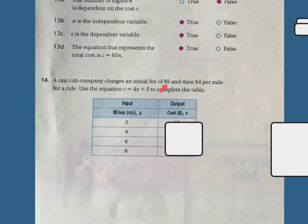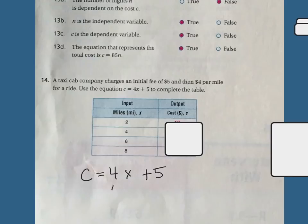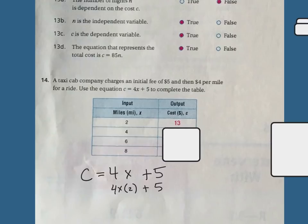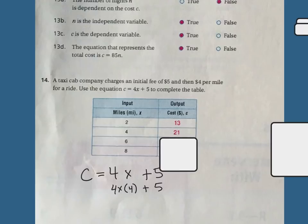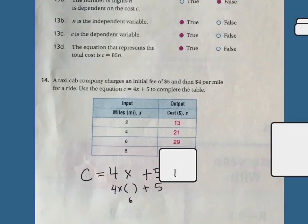Number 14: a taxi cab company charges an initial fee of $5 and then $4 per mile for a ride. Use the equation C equals 4X plus 5 to complete the table. Plugging in 2: 4 times 2 is 8 plus 5 is 13. Plugging in 4: 4 times 4 is 16 plus 5 is 21. Plugging in 6: 4 times 6 is 24 plus 5 is 29. Plugging in 8: 4 times 8 is 32 plus 5 is 37.